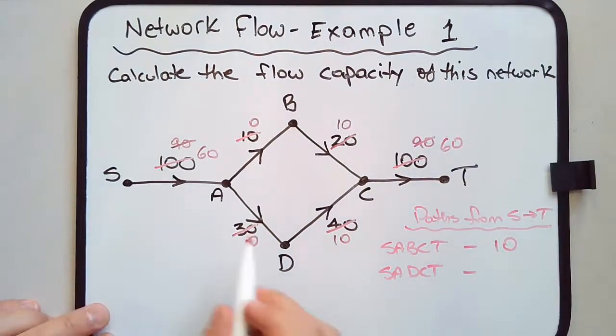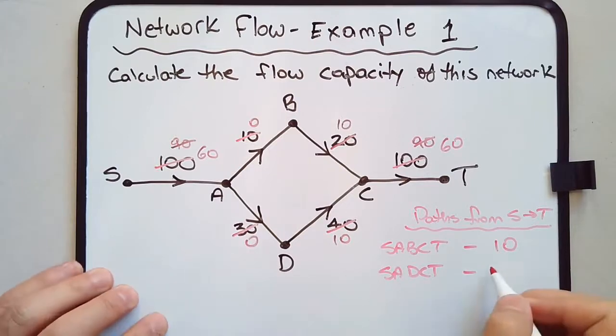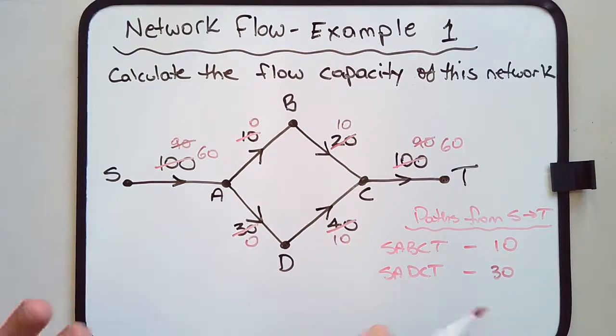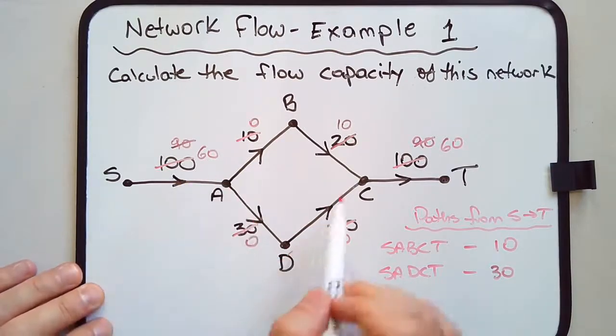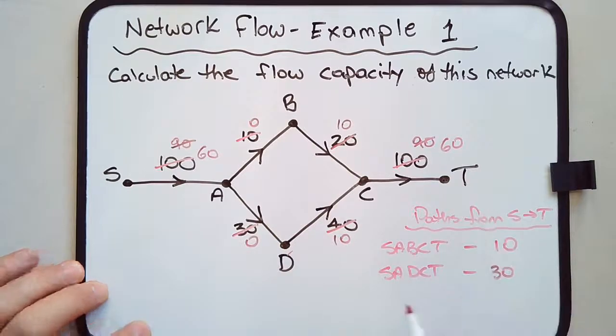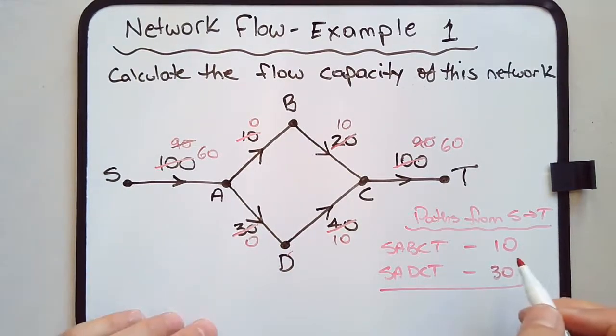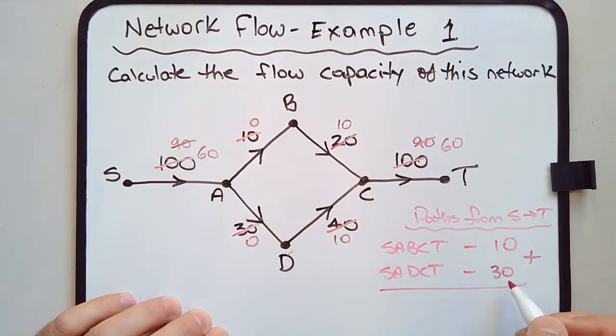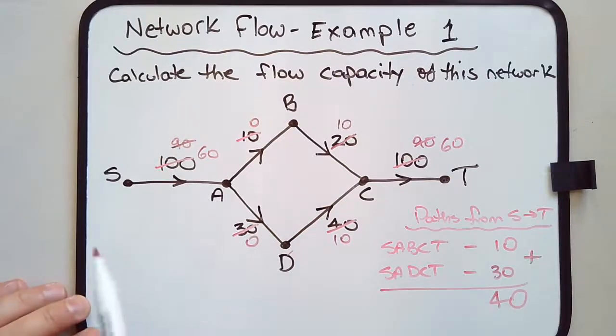The flow capacity along this particular path would be 30. When I talk about flow capacity in this context, I'm talking about the capacity of this path. The flow capacity of this entire network is the sum of these two numbers: 10 plus 30 is 40. Therefore, the total flow capacity is 40 litres per minute.